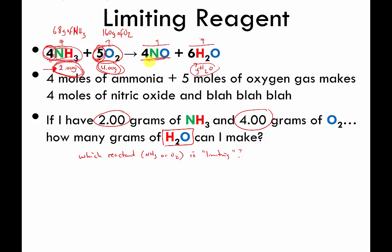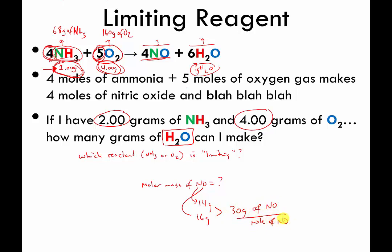Next, nitric oxide: molar mass of NO — nitrogen is 14 g, oxygen is 16 g — that's 30 g per mole of NO. But we have four moles in the equation, not one mole, so four moles of NO weighs 30 times 4, which is 120 grams.